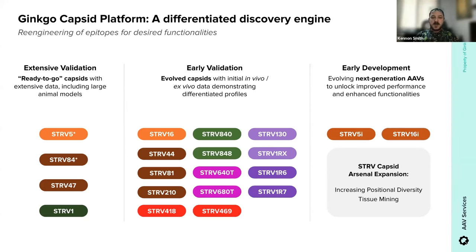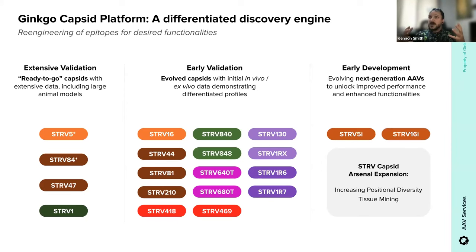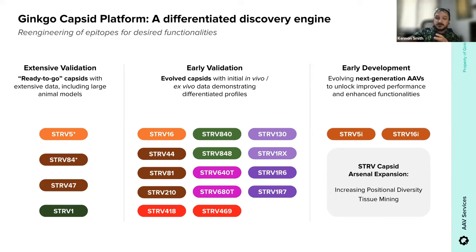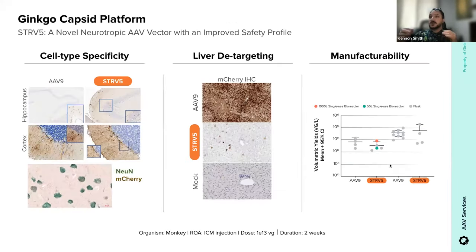We'll talk about two capsids as individual case studies today: Strive-5, a CNS capsid with enhanced cell type specificity, and Strive-47, a pantropic capsid with enhanced potency. The third bucket on the right is made up of all these capsid libraries and pre-existing evolutionary tissues from Stride Bio's programs. When we think about the future of capsid engineering at Ginkgo, this is what excites us most — this collection represents the largest well of untapped potential. Stride Bio's application of structural knowledge allowed for the engineering of these capsids, and it's in this space that we hope to unlock the next generation of AAVs.